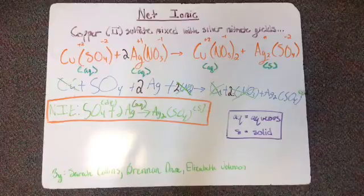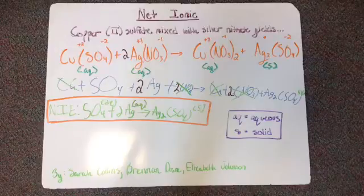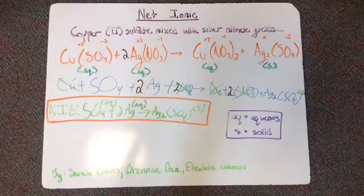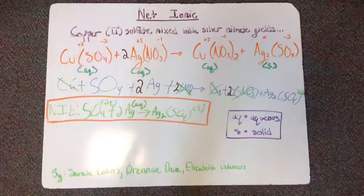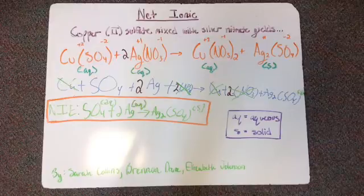Which gives us, in the net ionic equation, sulfate plus 2 silvers yields 2 silvers and sulfate. To get that, you had to cancel out both the coppers on both sides of the equation and the 2 nitrates on both sides of the equation.